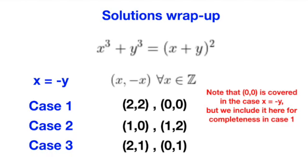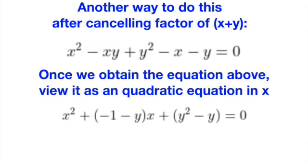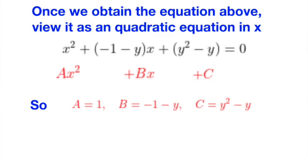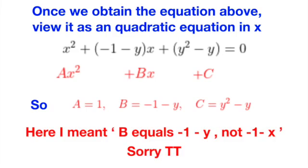What if we don't prefer the method of factorization? There is actually another way to do this, right after we cancel off the factor of x plus y from both sides of the equation. We can rewrite the equation to view it as a quadratic in terms of x, with coefficients in terms of y. If we view the quadratic as ax² plus bx plus c, then here a equals 1, b equals minus 1 minus y, and c equals y² minus y.